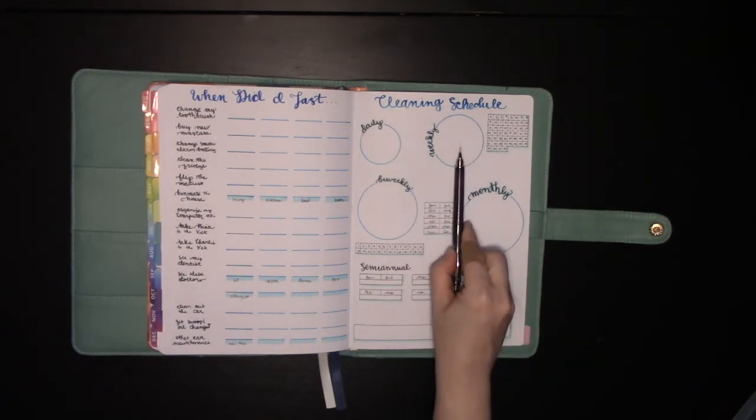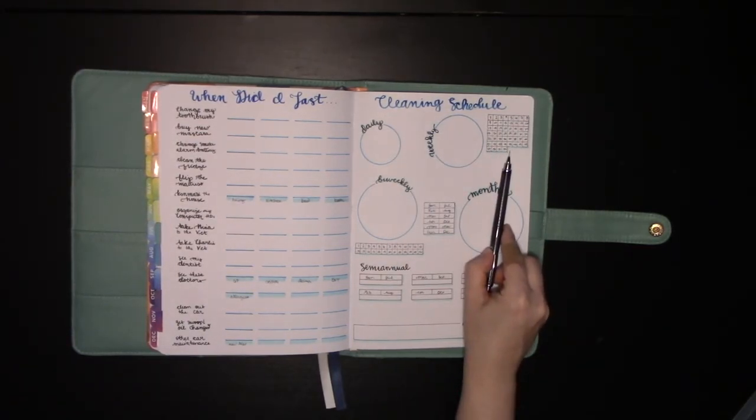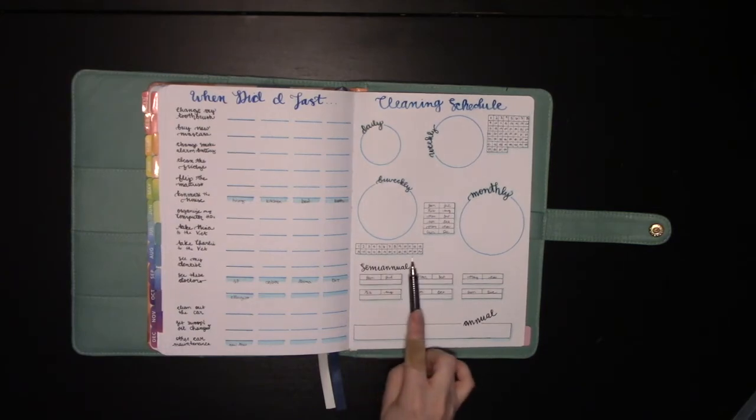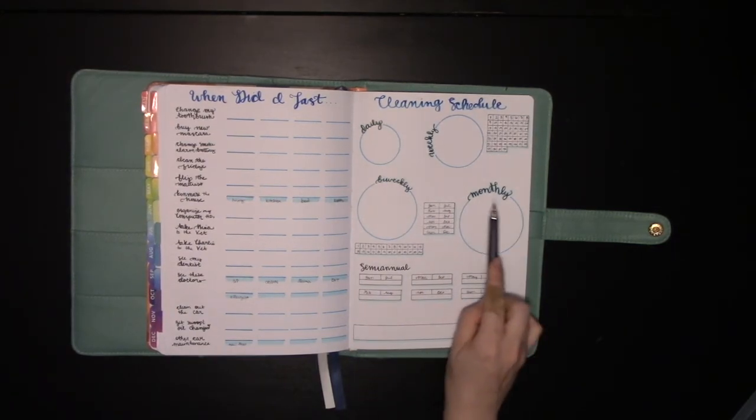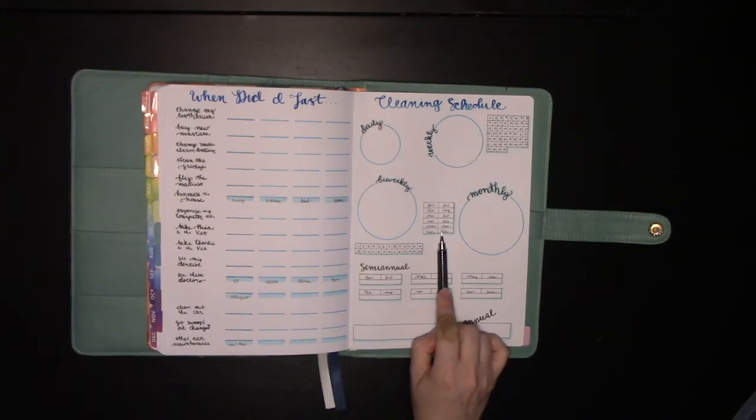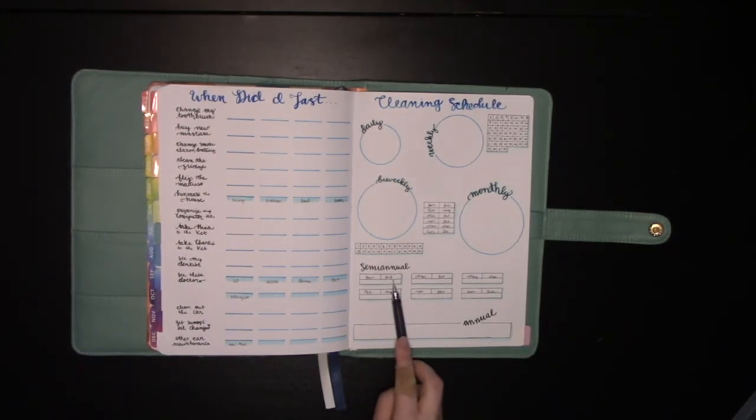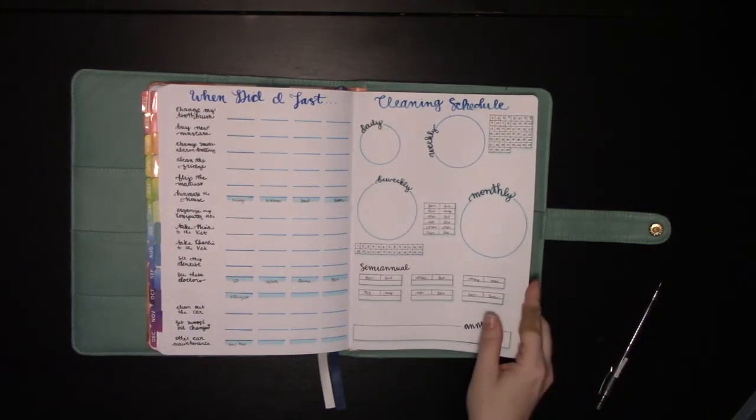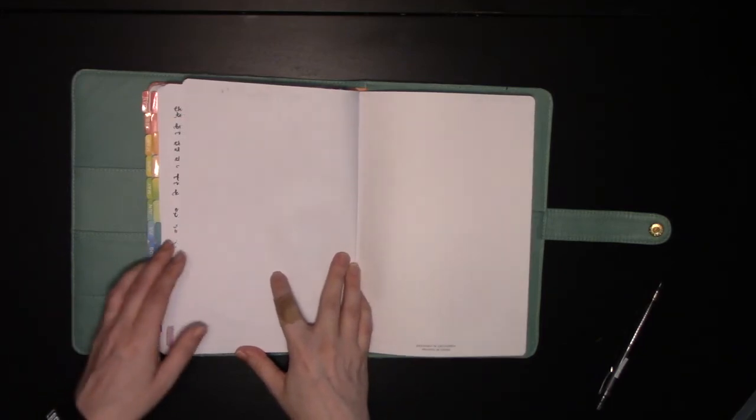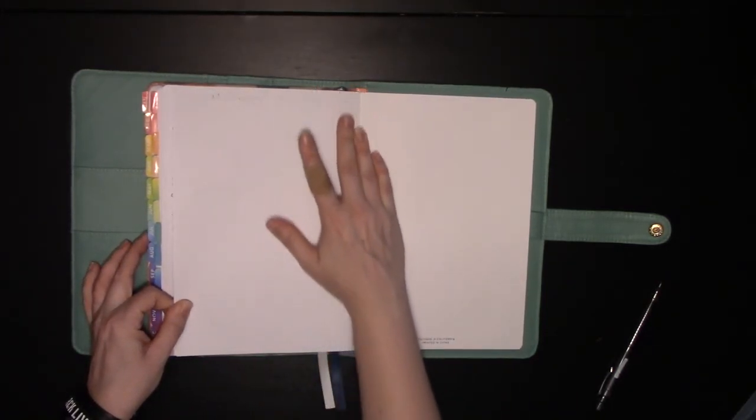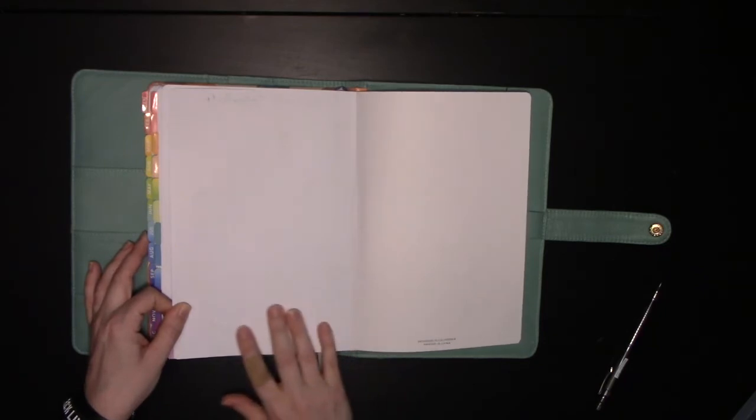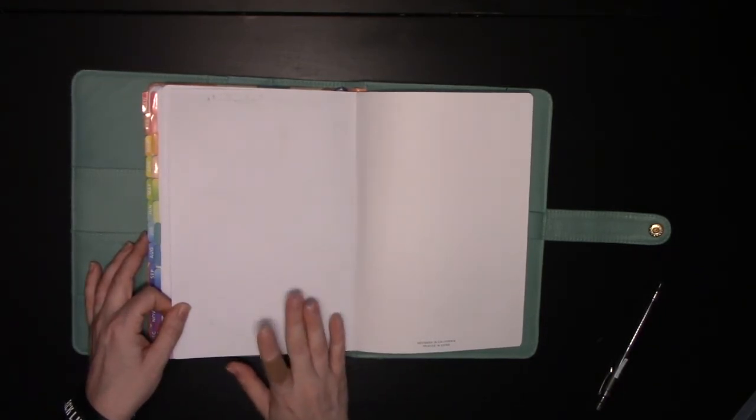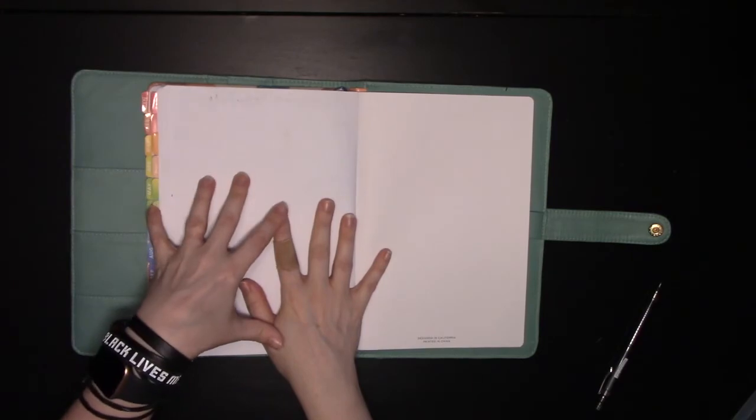Cleaning schedule daily, weekly with the boxes to color in as I do it weekly, bi-weekly with the boxes to color in as I do it bi-weekly, monthly cleaning tasks with the boxes to color in as I do it monthly, semi-annual tasks will go down here, color in the boxes as I do the months and then the annual tasks down here. And then I have my back page that is blank that I will use as a Tombow marker tracker so that I can always turn to my back page and see what my Tombow markers look like on this particular paper. You can check out my setup video for the 2020 planner to see exactly how that will look.